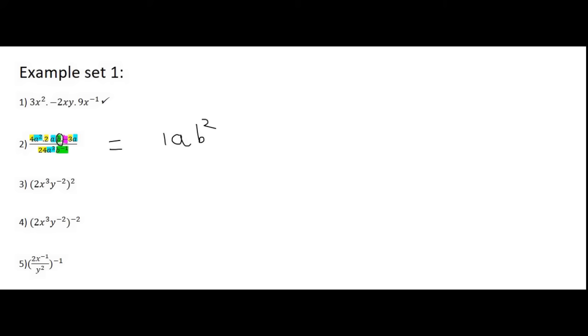Then we need to look at the number of negatives, and in which case there's only 1. And 1 negative makes the whole answer a negative. And there's your answer. Negative 1AB squared.